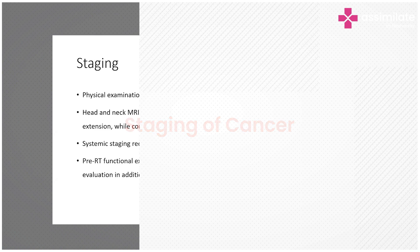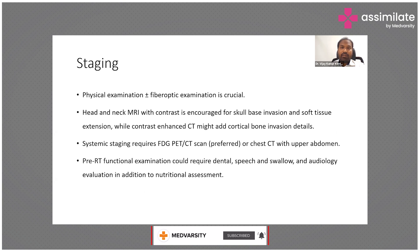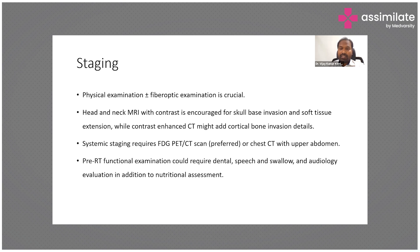We need a head and neck MRI with contrast, which should include from skull base up to the level of the clavicle for staging. We also need systemic staging, for which a PET-CT scan is preferred, or we can go with a chest CT including the upper abdomen, as we need to screen the liver as well.